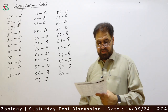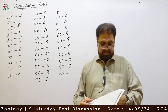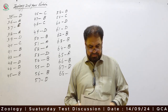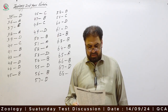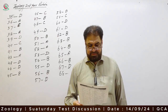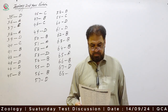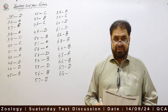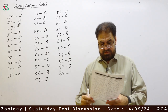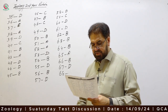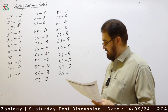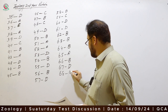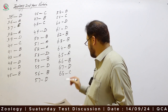Question 68, the last question: Appendix, coccyx, and mammary glands of men are examples of vestigial organs. Option C is correct. Vestigial organs are non-functional organs.